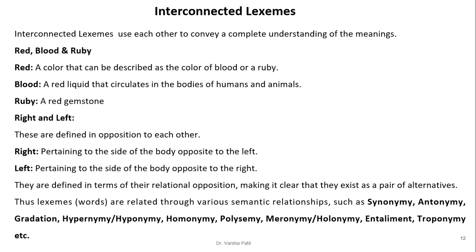Interconnected lexemes use each other to convey a complete understanding of meaning. For example, 'red' is described as the color of blood or a ruby; 'blood' is defined as a red liquid that circulates in the bodies of humans and animals; and 'ruby' is a red gemstone — all referencing each other. Similarly, 'right' and 'left' are defined in opposition to each other, making it clear they exist as a pair of alternatives.